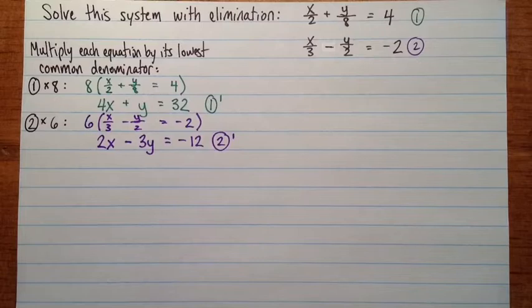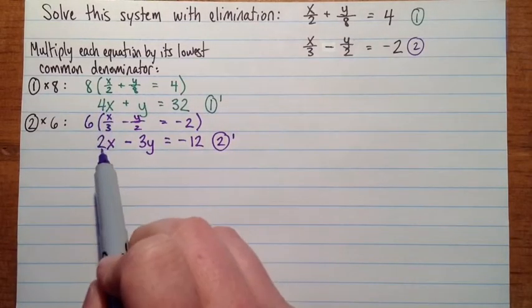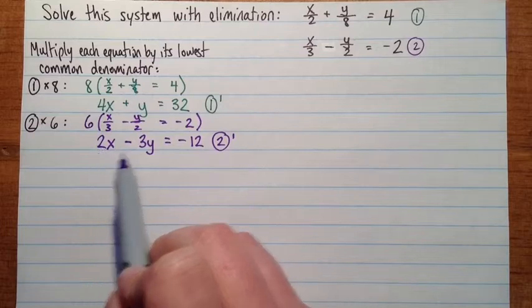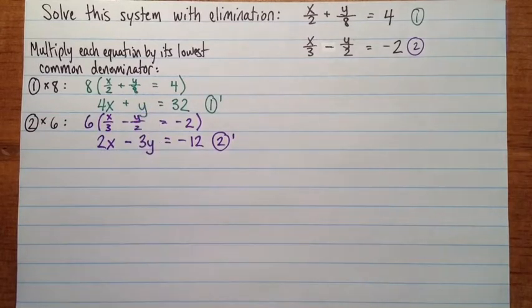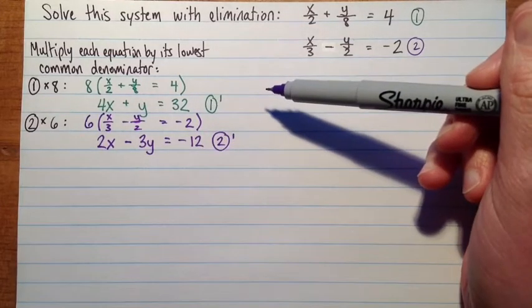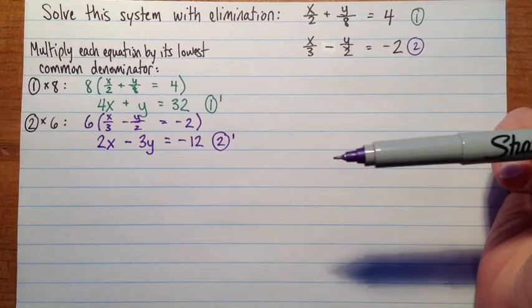But actually, this is sort of the second best situation, because 4 is a multiple of 2, and also negative 3 is a multiple of 1. So we can eliminate one of the variables by only multiplying one of these two equations, which is nice. It just saves us a little bit of work.